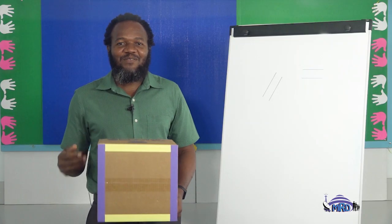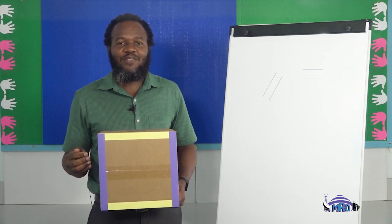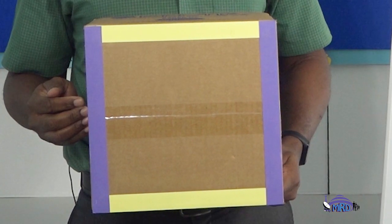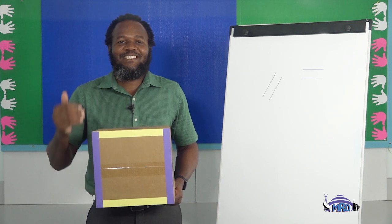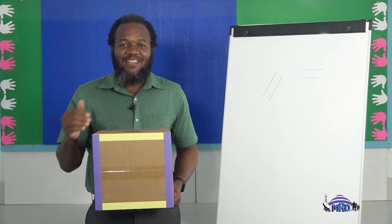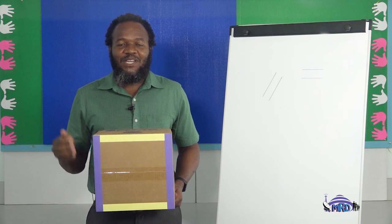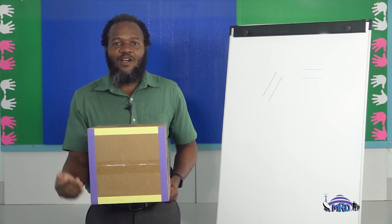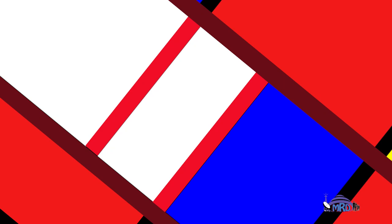Now, I have my favorite box. From my box, can you identify the colors of the parallel lines? Now, if you chose the purple lines, they are parallel to each other. But if you also chose the yellow lines, they are also parallel to each other.